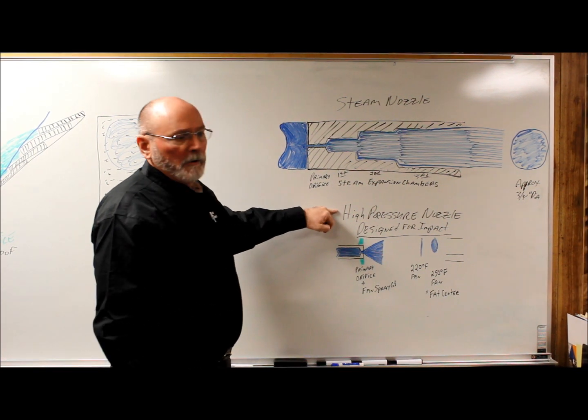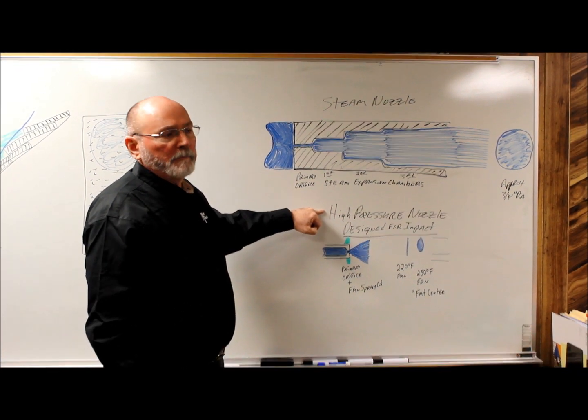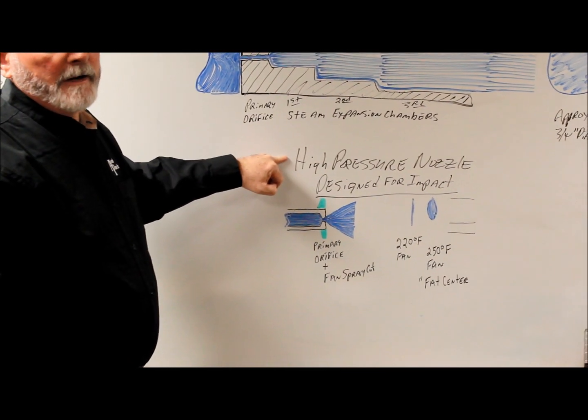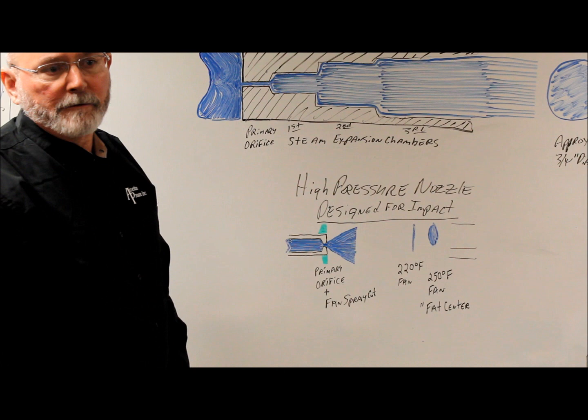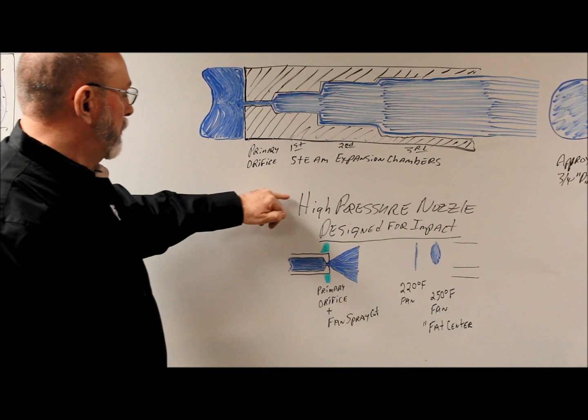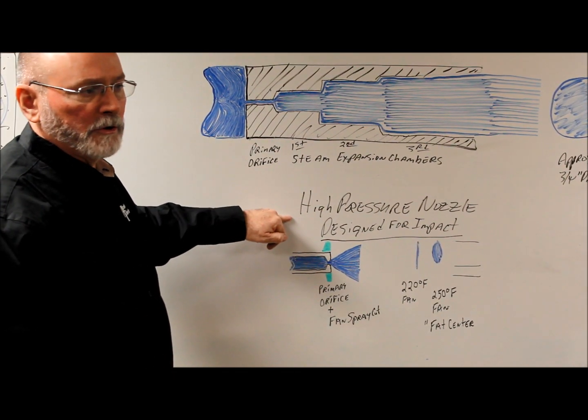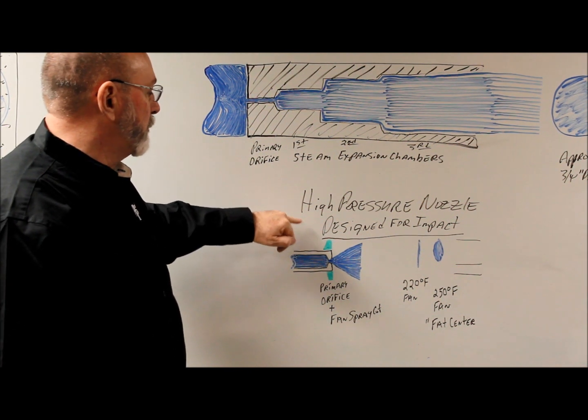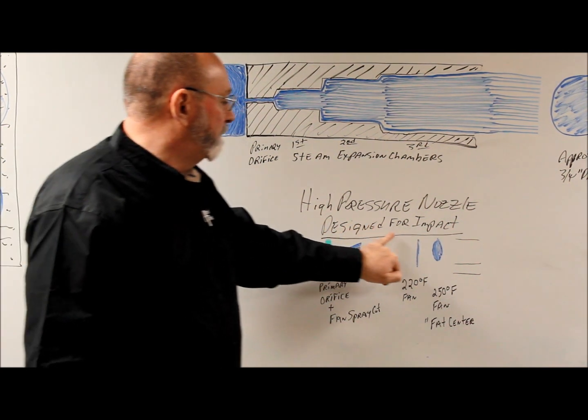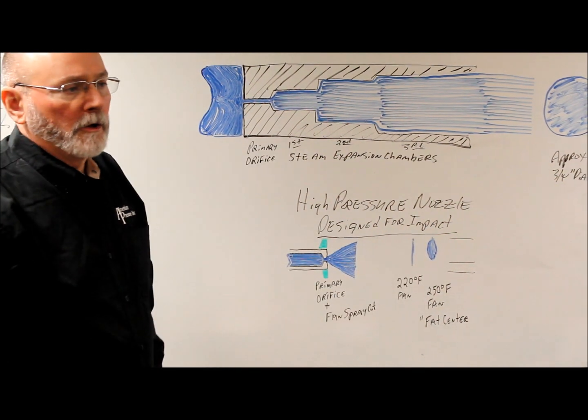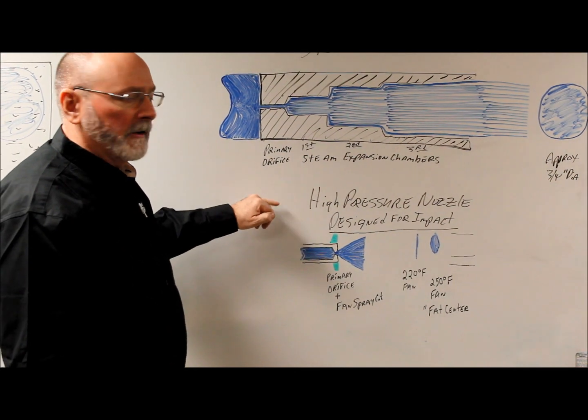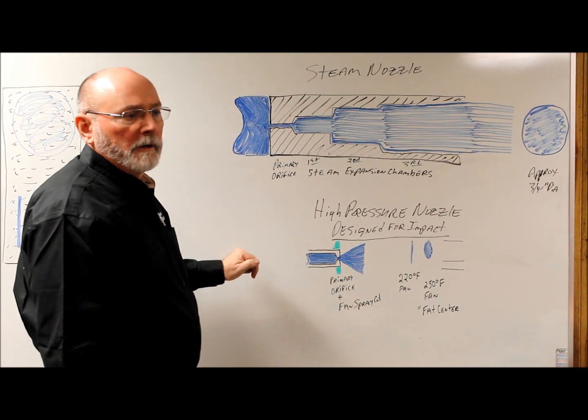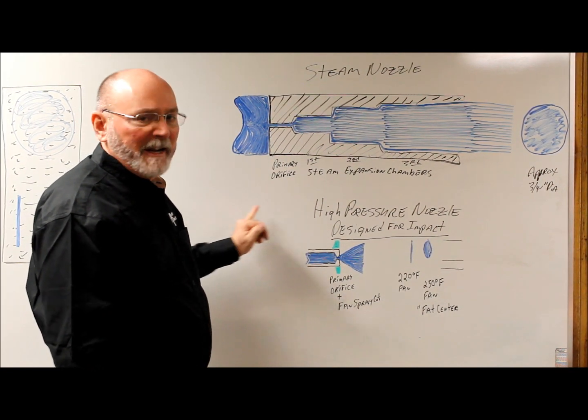High pressure nozzles came along when we started building up the pressure in the system. Early days we were at 500 psi, now we're up to 90,000 psi with nozzles. But these nozzles that we use mainly in pressure wash are designed for 5,000 psi. So a high pressure nozzle is strictly designed for impact. We're going to remove a film, let's say a road film, let's say a paint surface.